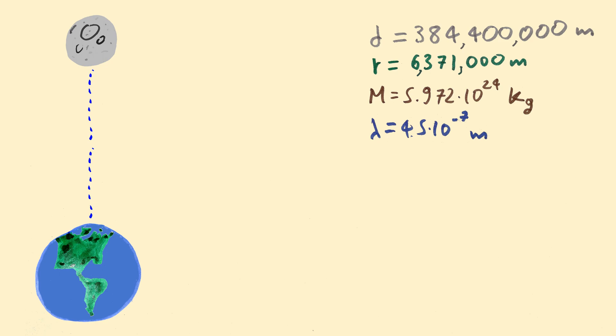But by how much? Let's say we shoot a blue laser to the moon. What color will the astronaut living on the moon see? How much will its frequency be? To calculate that, we would need the distance of the moon to the center of the earth, the radius of the earth, the mass of the earth, and the wavelength of blue light. Here is everything. Let's see.